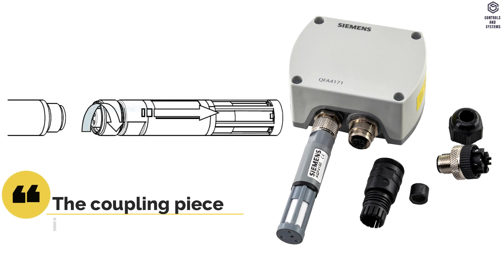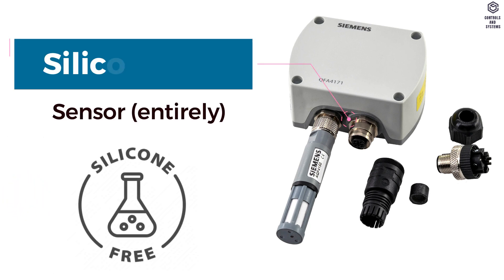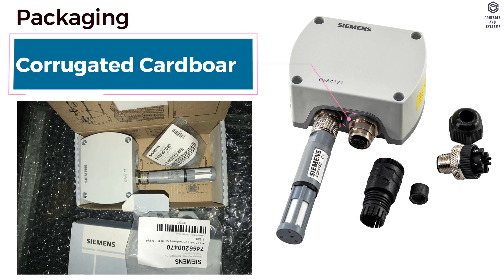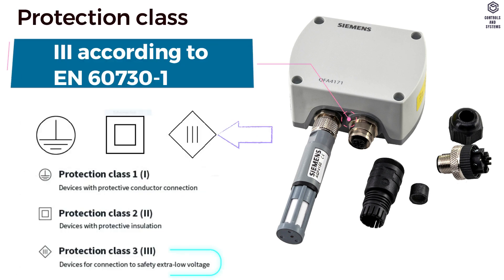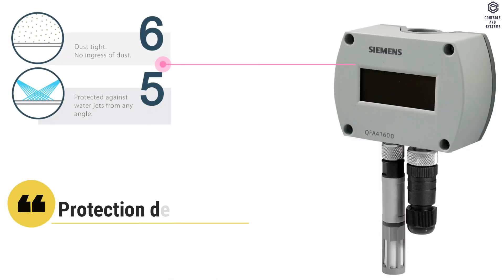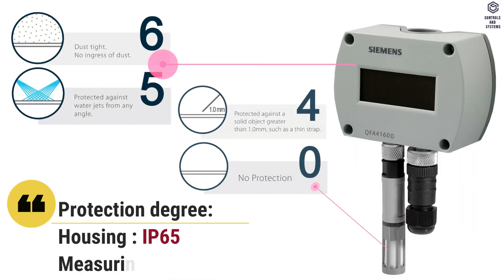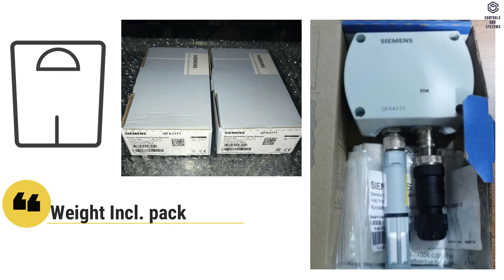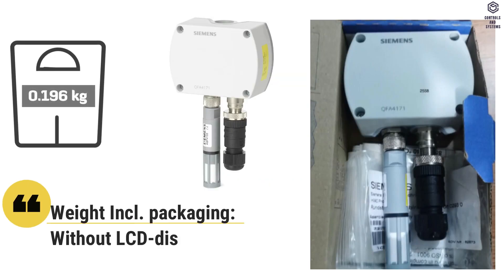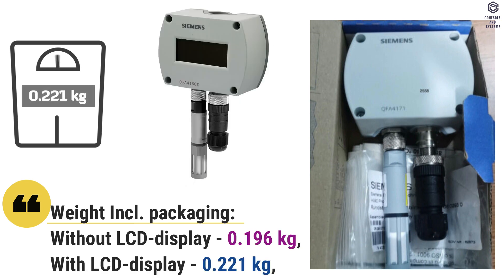The coupling piece is secured to the housing and internally wired. Sensor entirely is silicon-free, packaging is corrugated cardboard, protection class is 3, protection degree of housing is IP65 and measuring tip is IP40. Weight include packaging, without LCD display is 0.196 kg, with LCD display is 0.221 kg.